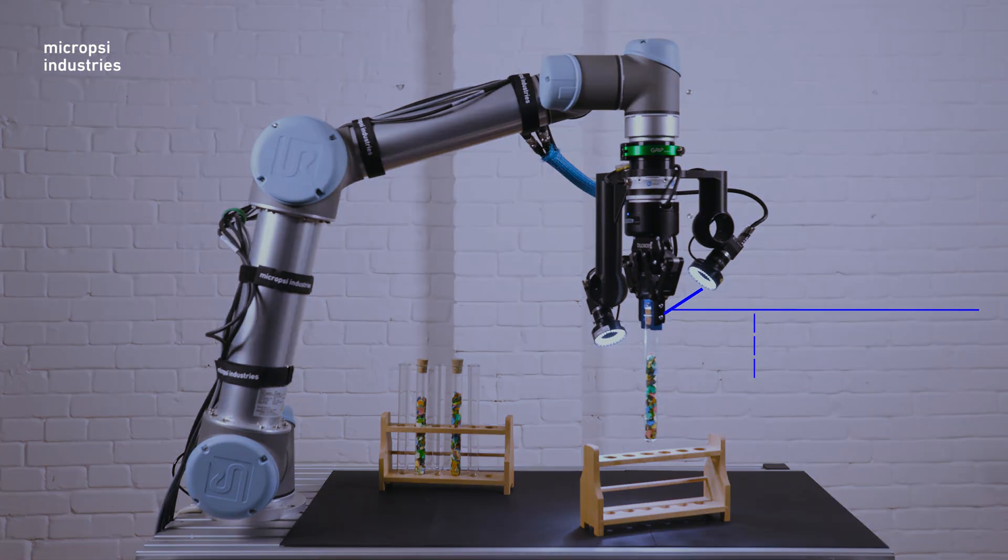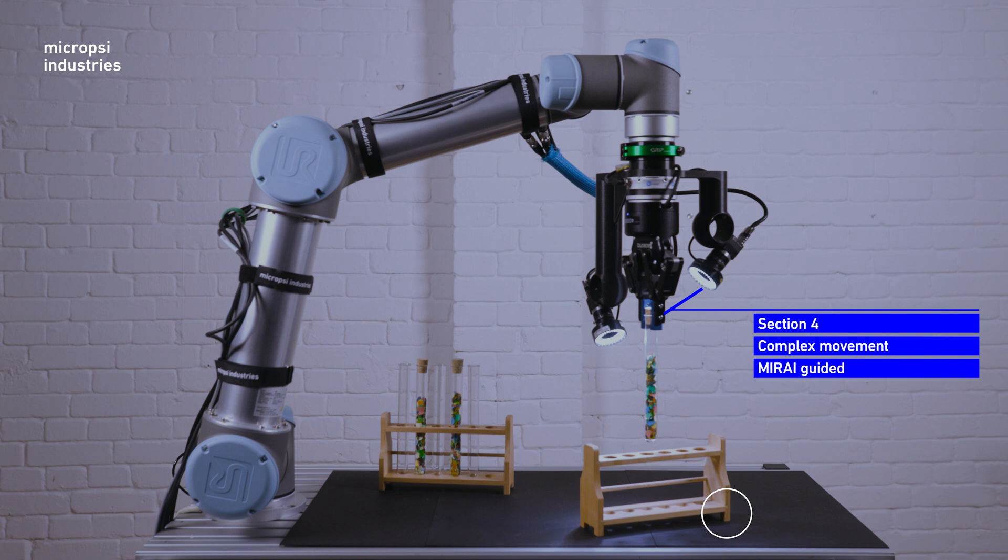In section 4, however, we have variance again. The second tray isn't in a predictable place for the robot. Therefore, we train the second skill.